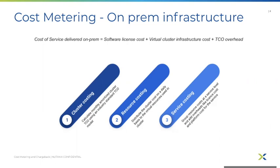We have a three-step process to get the service level costing. Step one helps calculate the overall cluster cost by identifying the hardware and software usage and using the purchase history. Step two distributes the cluster cost on a daily basis to resources within the cluster. And step three groups the resources on the basis of services and subservices like virtual machines and snapshots.